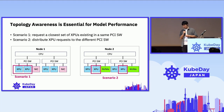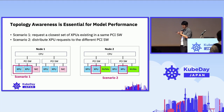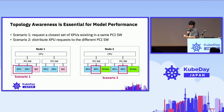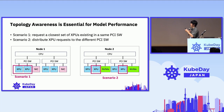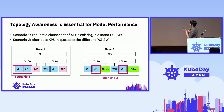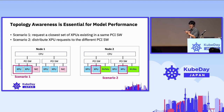In another scenario, we want to get two cards in a node but distribute the XPUs across different PCIe switches. That is another special use case. For example, some data tensors in MVDM strategies need to be copied directly one by one, so we want to distribute XPUs to different switches, or to those nearest to a storage node.